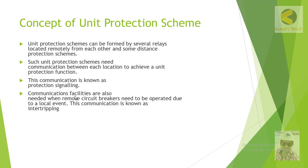In a unit protection scheme, when there is a fault on a unit — for example a transformer or a line — it trips the feeding sources simultaneously. In a graded protection scheme, tripping is done in grades: for example, if you have a 400V incomer breaker and an outgoing breaker, a fault on the outgoing feeder will first trip the outgoing breaker, and only if that is unsuccessful will the incomer trip. This is graded protection.